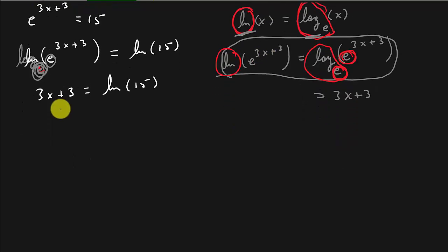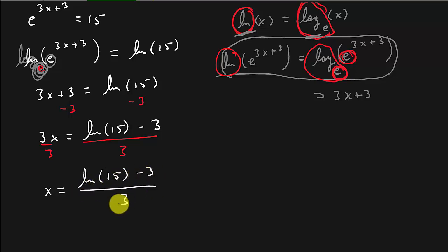So now let's solve for x. So I'm going to subtract 3 from both sides. So that's going to give me 3x equals natural log 15 minus 3. And then we're going to divide both sides by 3. So I get x is equal to natural log 15 minus 3 divided by 3. And this is your answer.